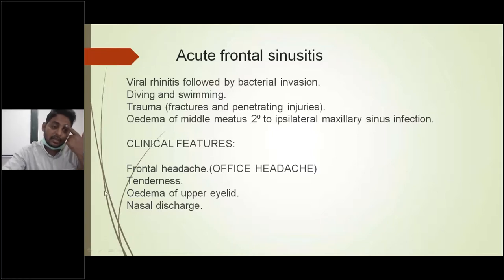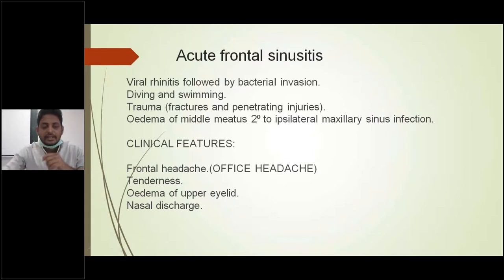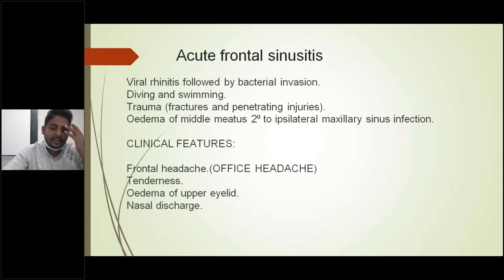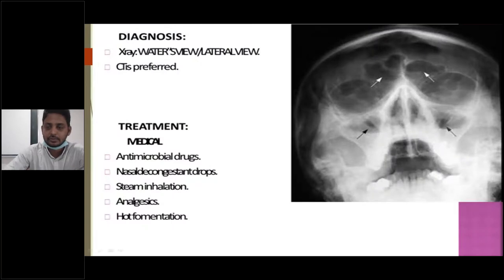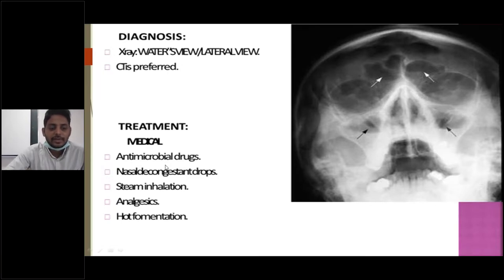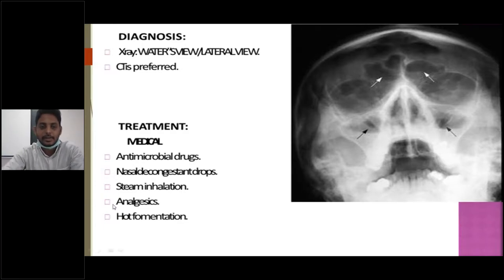In maxillary sinusitis, there is edema of the cheek and edema of the lower eyelid. In frontal sinusitis, there is edema of the upper eyelid. There will also be nasal discharge, which may be purulent or non-purulent. The white arrows indicate the frontal sinuses above the orbit and the black arrows indicate the maxillary sinuses. Treatment of frontal sinusitis follows the same lines: antimicrobials, nasal decongestants, and steam inhalation. As with maxillary sinusitis where antral lavage is done if unresponsive, if the patient does not respond to frontal sinusitis medical treatment, trepination of the frontal sinus is performed.